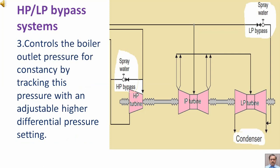Third, controls the boiler outlet pressure for constancy by tracking this pressure with an adjustable higher differential level.